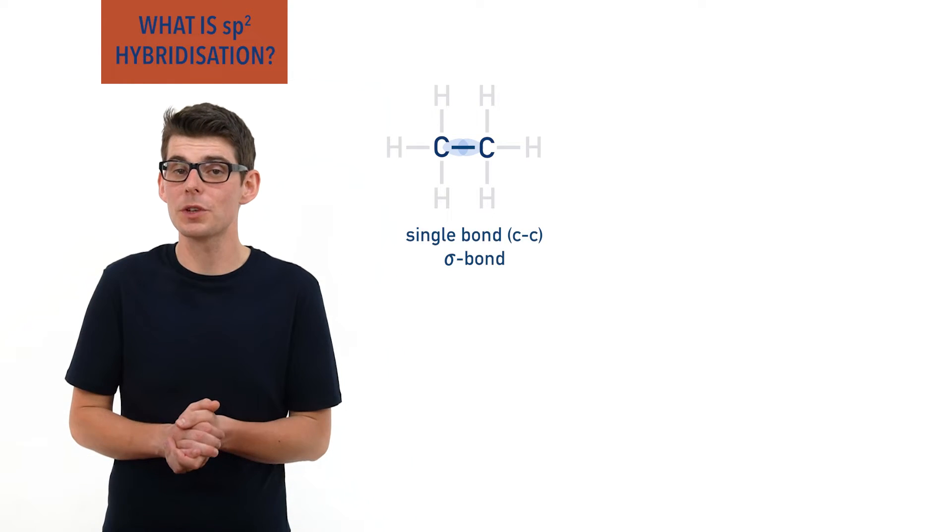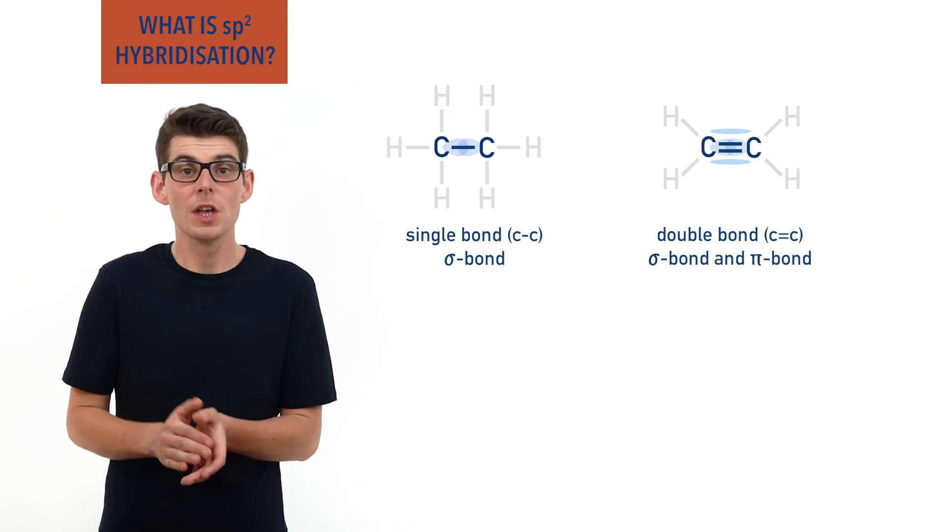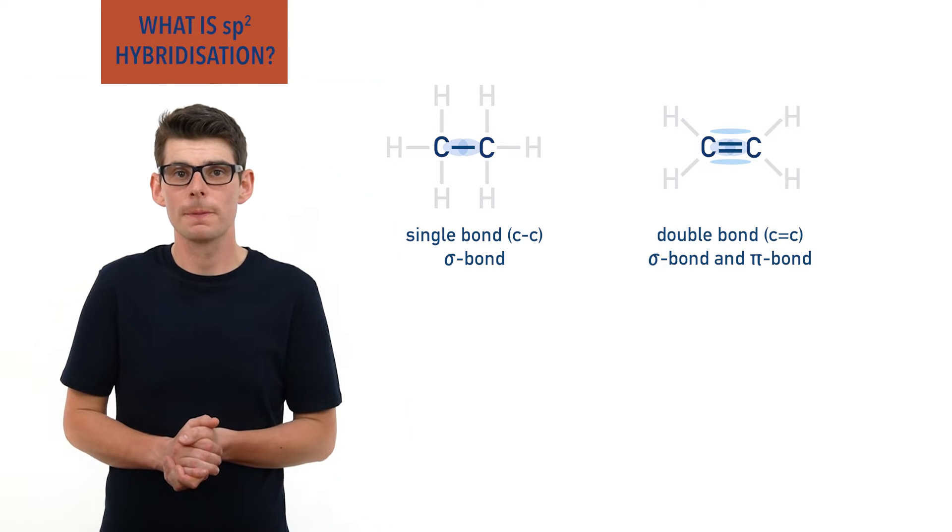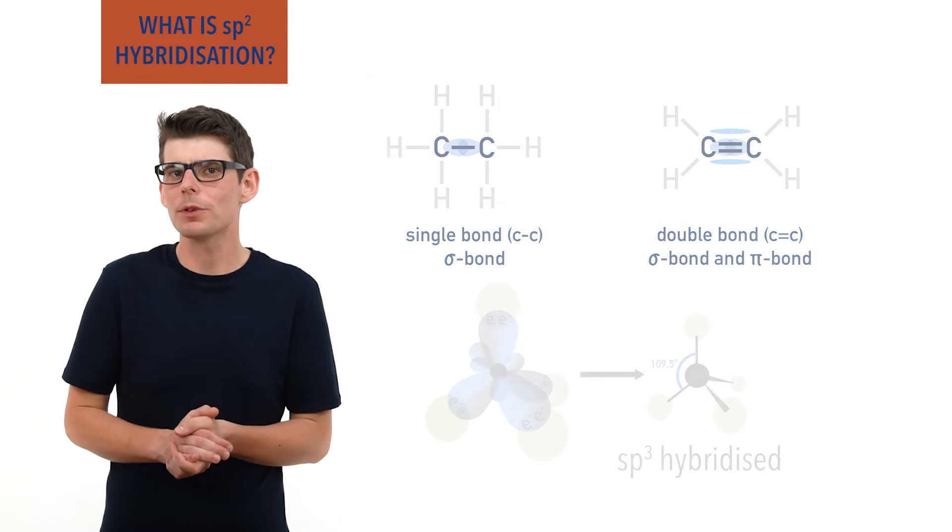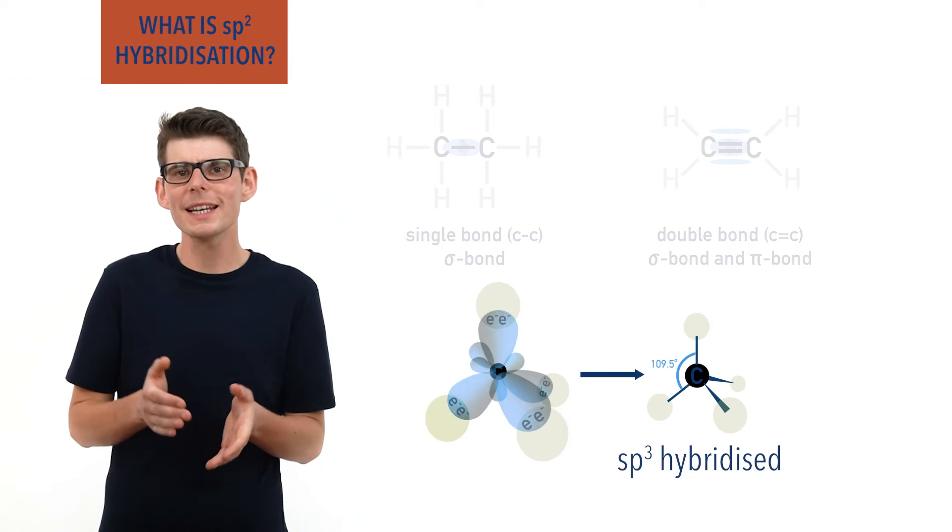We know that carbon can form double or pi bonds with other carbon atoms, and an sp3 hybridization of orbitals wouldn't allow this to happen.